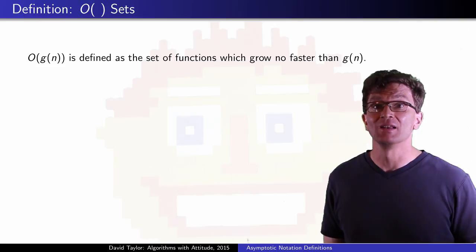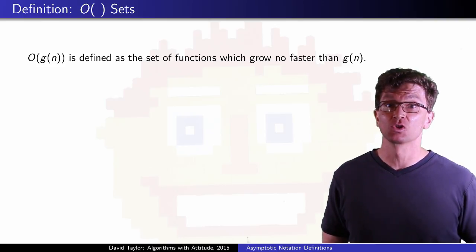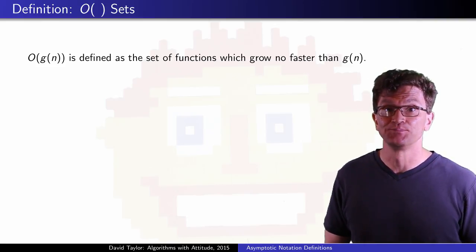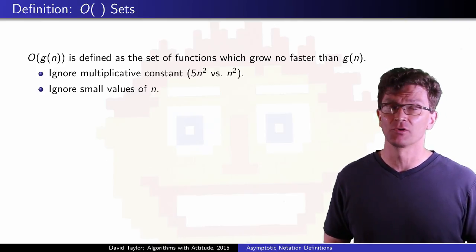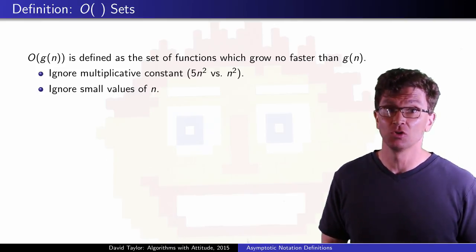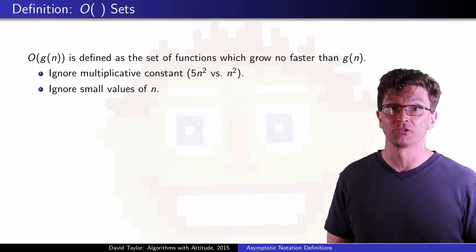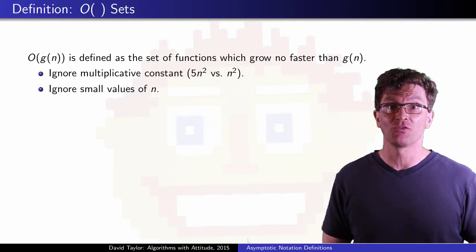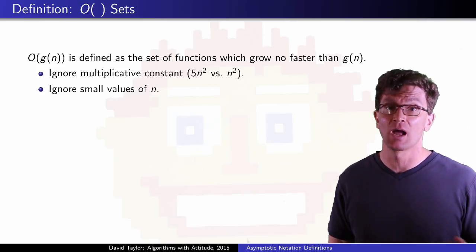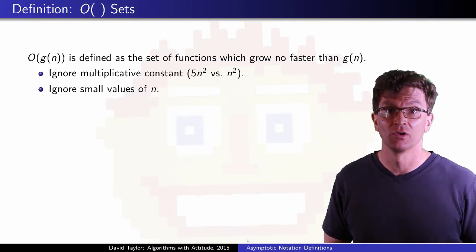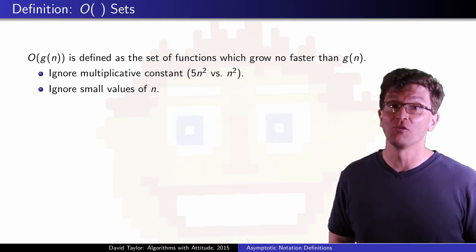Big O of g(n) is defined as the set of functions which grow no faster than g(n). We're going to ignore multiplicative constants, 5n² versus n². That's like changing to a machine that's 5 times faster. Everything on it is 5 times faster, but we still want to know, for a particular program, how is its runtime going to scale with input size.